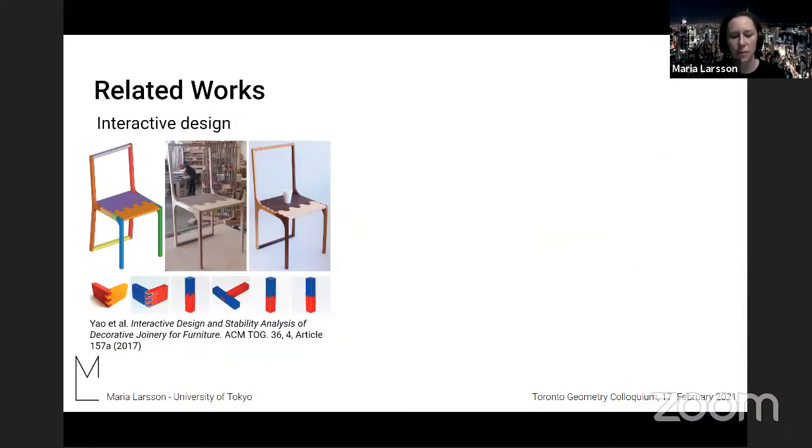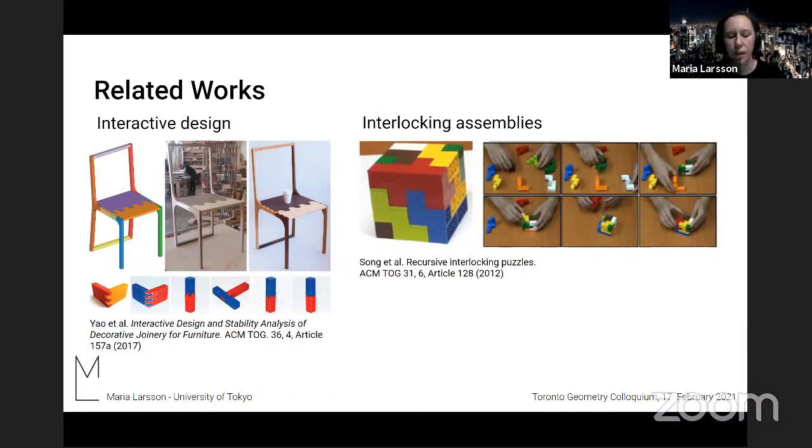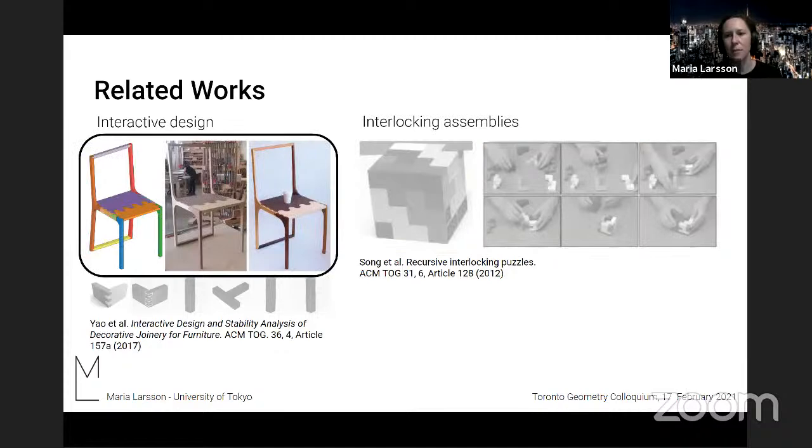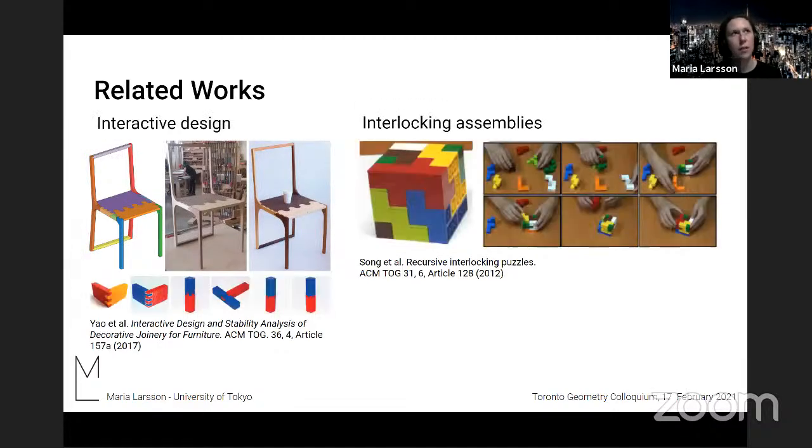And other works in the computer graphics field have tried to tackle this problem of designing wood joints by interactive design. For example, this work, the user draws like a curve on the exterior surface and then generates the joints. And here's another example where joints that are interlocking are automatically generated. And these works, they share one limitation. And that is that the results are typically 3D printed or built from Lego. And in the case when they're actually fabricated from wood, it's made by hand by a professional woodworker. But the computational fabrication techniques for manufacturing joints are not considered as integral parts of the systems. So that's what we're trying to do.